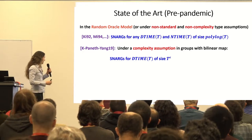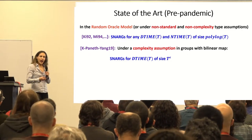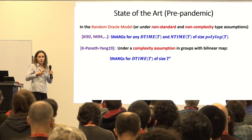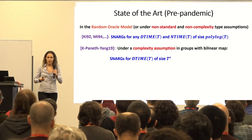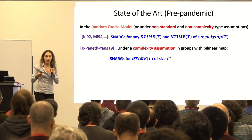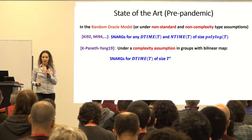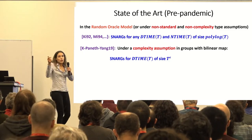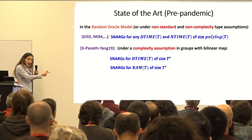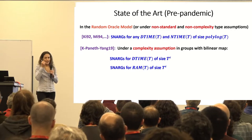This work was very influential. After it, there were many works trying to get rid of the ideal assumption and construct SNARGs under standard assumptions. We couldn't do it for many years. There were various relaxed models — designated verifiers needing a trapdoor, or pre-processing models. Then together with Omer and Lisa Yang, in 2019 we showed how to construct SNARGs under at least some complexity assumption on groups with bilinear maps — a standard-looking complexity assumption. The SNARG we got is for any time-T computation, of size T^ε for any small ε.